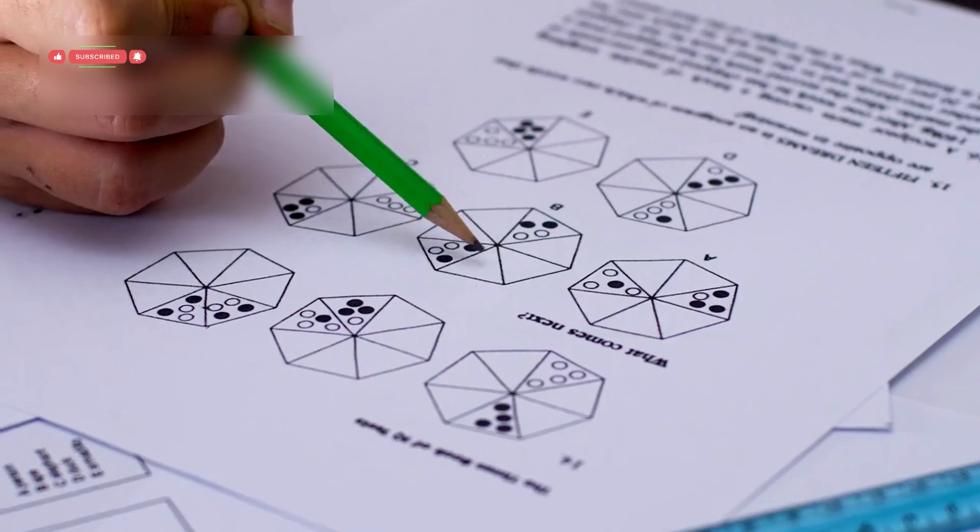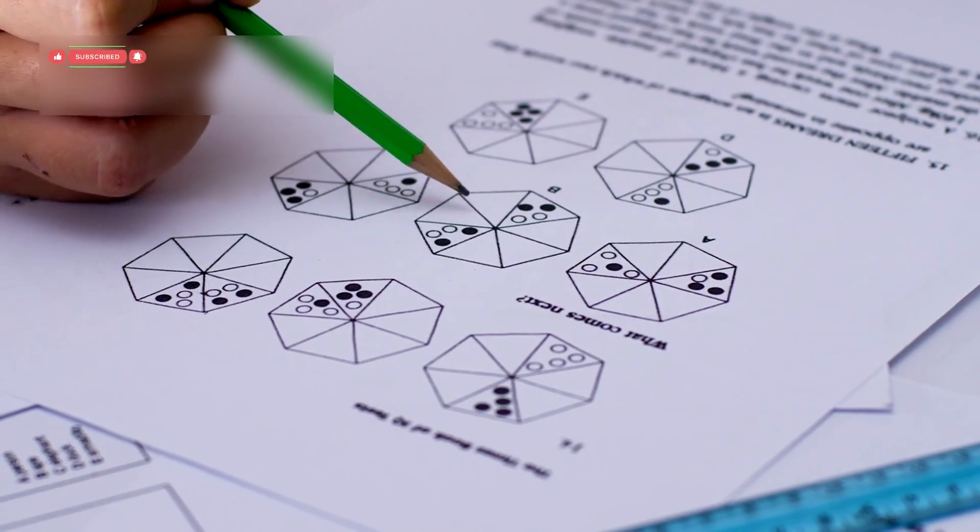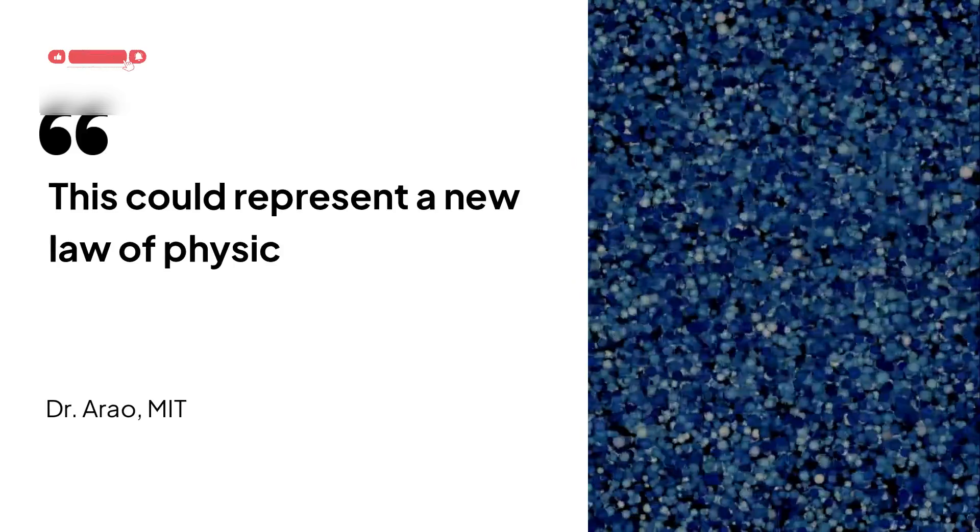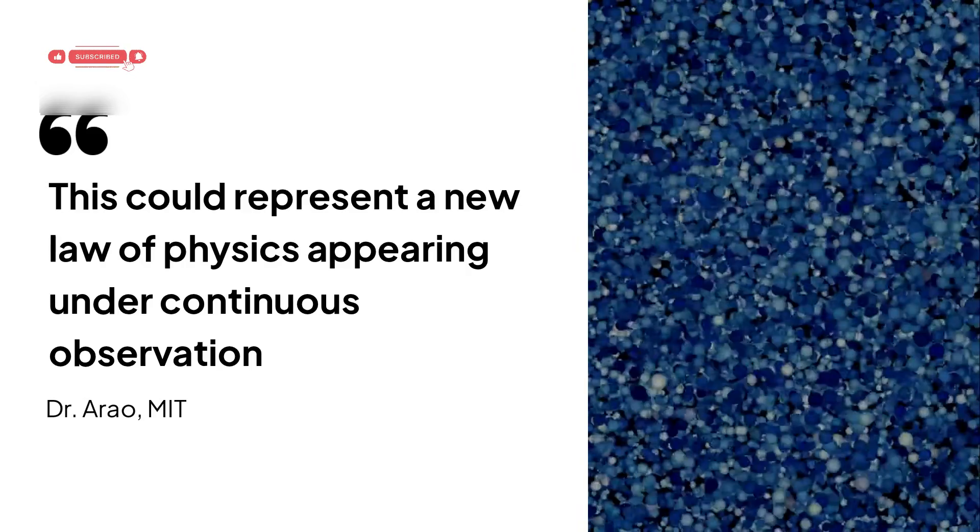At first, scientists thought it was a glitch. But after running the tests again and again, they realized it was a real phenomenon. Dr. Arau from MIT said this could represent a new law of physics, one that only appears under continuous observation.